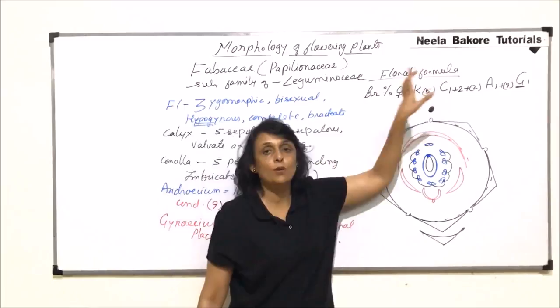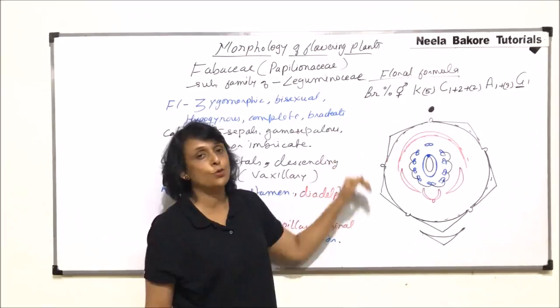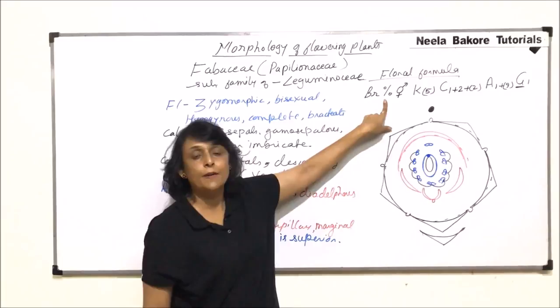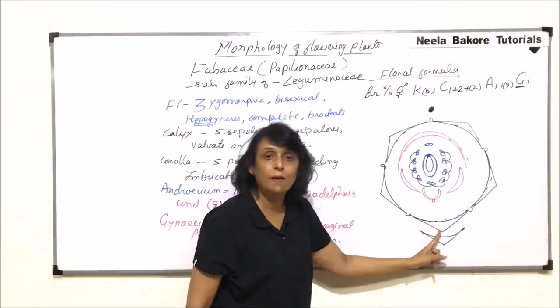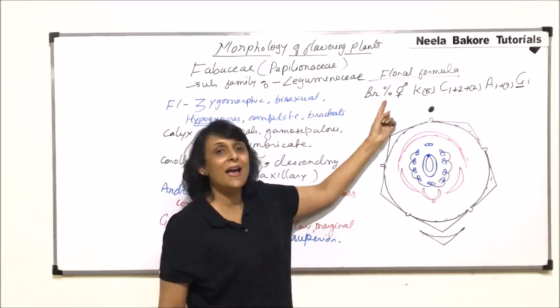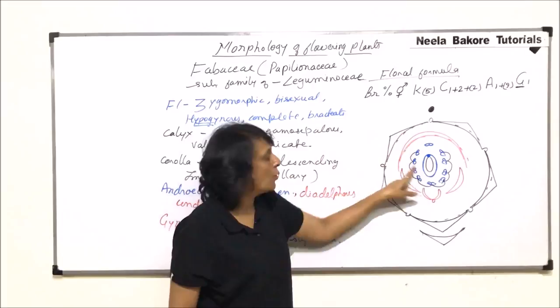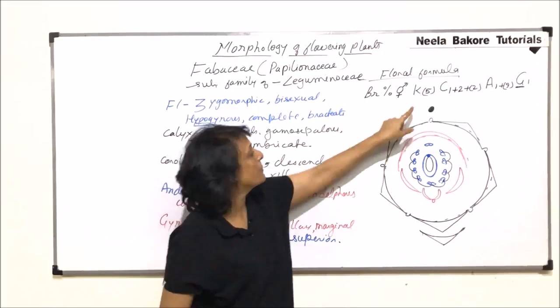I told you that we will come back to this formula after we are done with the diagram. Now let us relate these two things. Bract we have written here, we have drawn here. Zygomorphic, that means it can be cut only through one plane. So if we cut it like this, then we get two equal halves. But if we cut it like this, we are not going to get two equal halves. So this is bilateral symmetry or zygomorphic. Hermaphrodite, we see both the whorls, reproductive whorls, that is androecium and gynoecium.